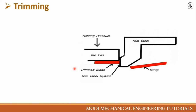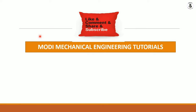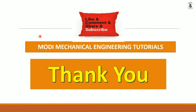Trimming is a simple operation to remove unwanted parts of sheet metals. Using a trim tool or trim steel, it cuts away the excess metal in a flange or flash from the workpiece. I hope you understand all these operations. If you like this video, please subscribe and share for more mechanical engineering tutorials. Thank you.